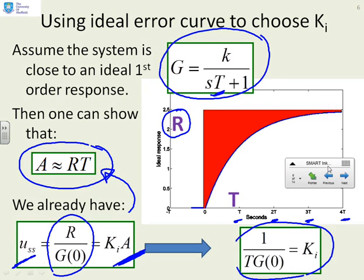That 1 over T g of 0 equals ki. So, if you can't see quite where that's come from, cross that A there. Write rT. So, you've now got r over g of 0 equals ki rT. Cross the r's. And now you can see 1 over g of 0 equals ki T, or ki is 1 over T g of 0. So, what's this telling you? If you want an error curve, a bit like the red-shaded one here, so with a time constant capital T, then you must set the integral gain to be 1 over T g of 0.